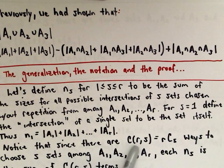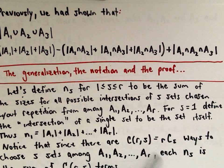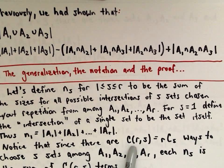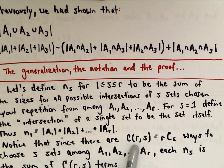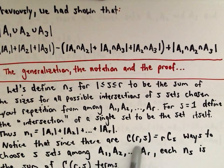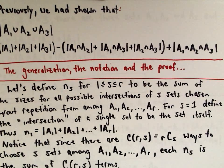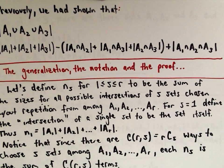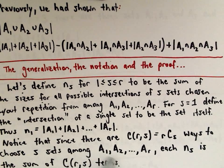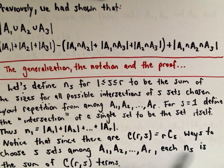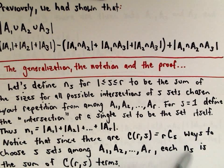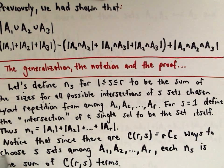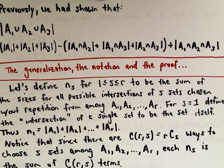We're going to use combinations to count a lot of things. I'll use the notation C(r, s), read as r choose s. Notice that since there are r choose s ways to choose s sets among A1 through A_r, each term n sub s is going to be the sum of r choose s terms.